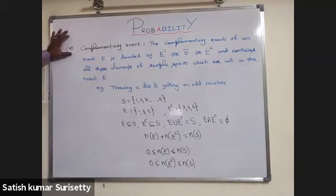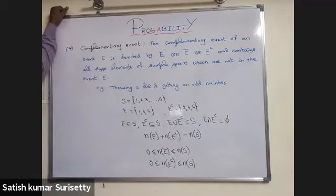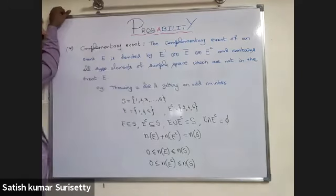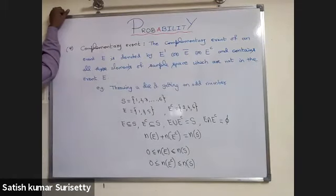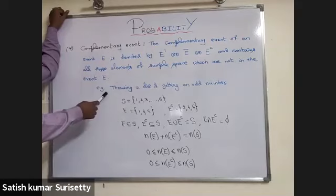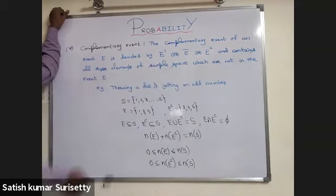The complementary event of an event E is denoted by E dash, E bar, or E complement, and contains all those elements of the sample space which are not in the event E. For example, consider throwing a die and getting an odd number.